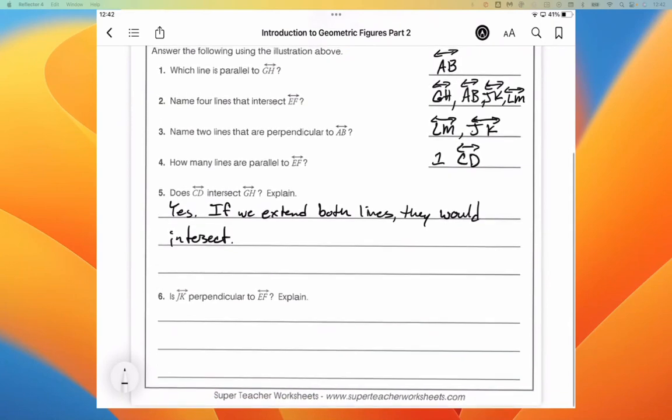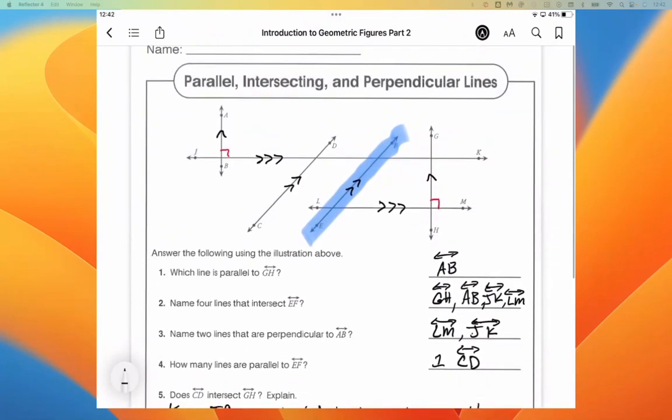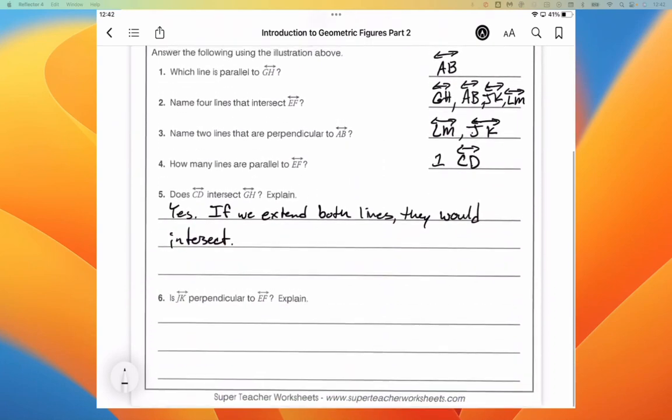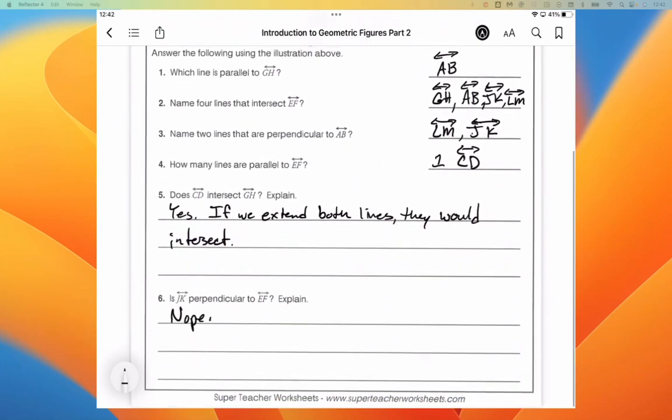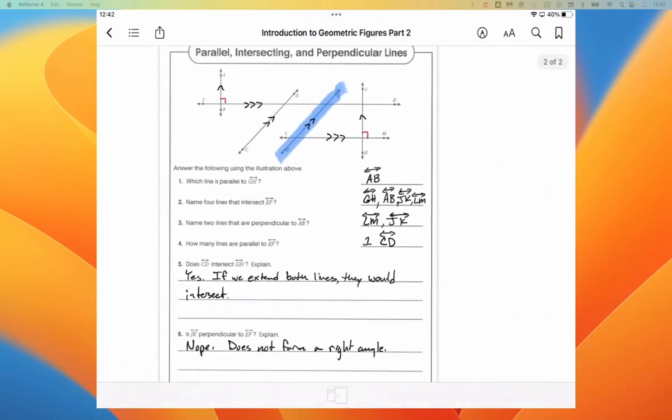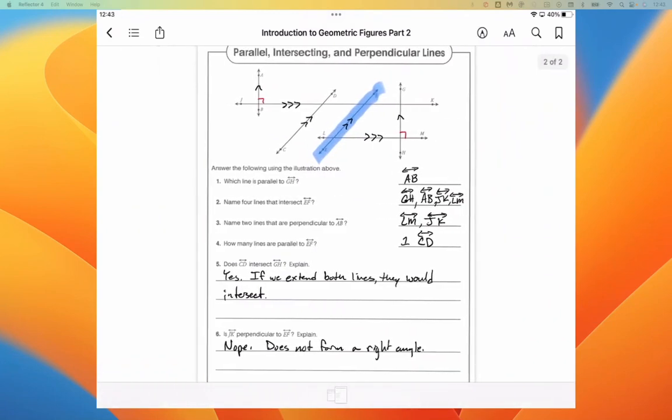And JK is JK perpendicular to EF. No, it is not perpendicular at all. It's easy to tell. It does not form a right angle. Okay. And that's going to be it for that one.